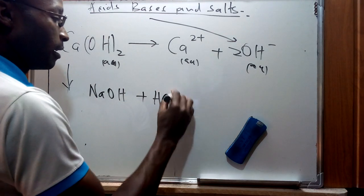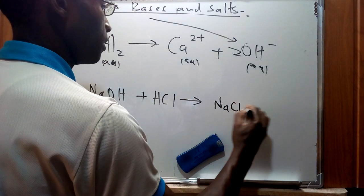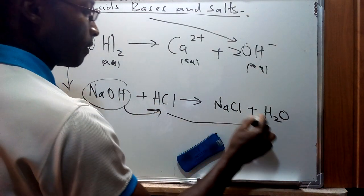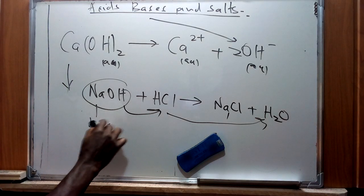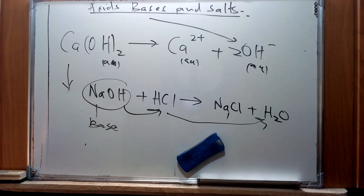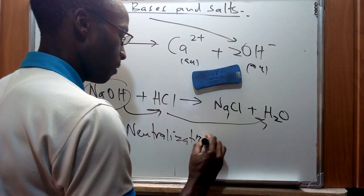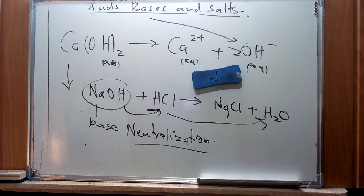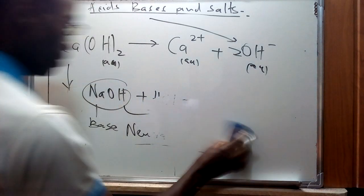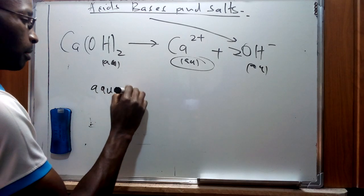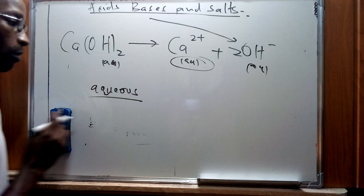A base can also be defined as a compound that reacts with acids to form salts and water. For instance, sodium hydroxide reacting with an acid produces salt plus water. A substance that reacts with an acid to produce salt and water is referred to as a base. There is a specific term for this kind of reaction — it is called a neutralization reaction — where an acid-base reaction results in the formation of a salt plus water. The term 'aqueous' refers to a substance that has been dissolved in water.